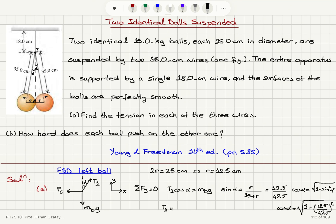The tension T1 equals the weight of the ball divided by cosine alpha: that is, mg divided by cosine alpha. With a 15-kilogram ball, the weight is 15 times 9.8, and cosine alpha is the square root of 1 minus (12.5/47.5) squared. Calculating this to three significant figures gives T1 equal to 152 newtons.